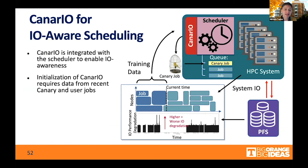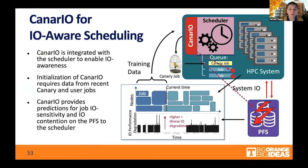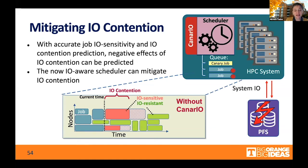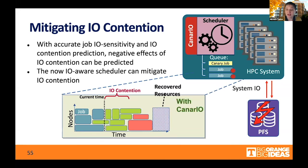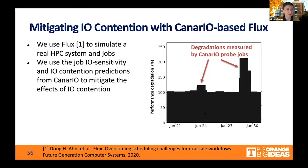These two models work together. The canary jobs are injected into the system, allowing us to annotate jobs as I.O. sensitive or I.O. resistant. As we predict an I.O. contention window, we can shuffle, terminate, or move I.O.-sensitive jobs and replace them with I.O.-resistant ones. The goal is to recover resources and reduce the time that individual jobs — especially those that are I.O. sensitive — spend idle, waiting for I.O. resources.